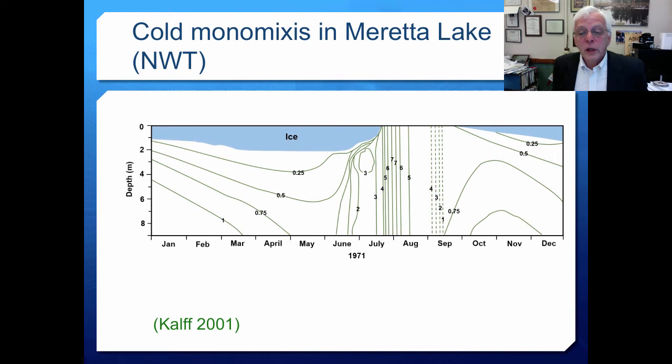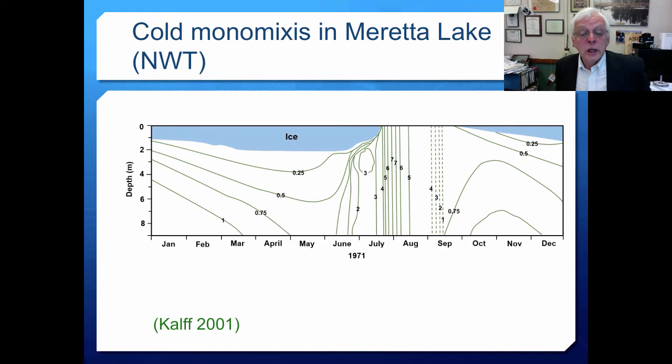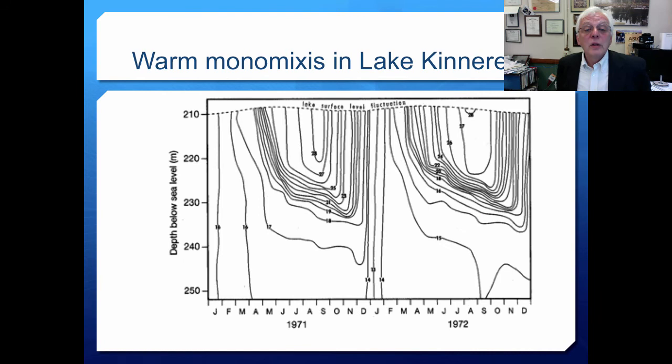Here is an isotherm plot for a cold monomictic lake - Moretta Lake in the Northwest Territories of Canada. The ice cover is substantial, about a meter and a half. The system is quite cold except when ice cover is lost, at which point it mixes top to bottom. Then it has very intermittent mixing before regaining ice cover, after which it's stratified for the winter. Vertical lines in the plot indicate mixing periods; relatively horizontal lines indicate stable or stratified conditions.